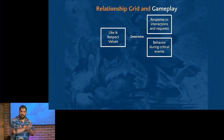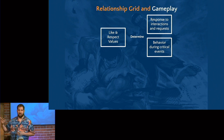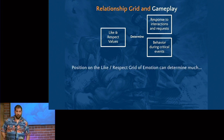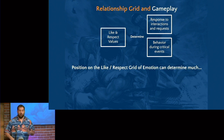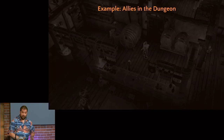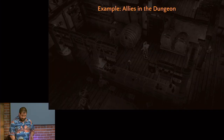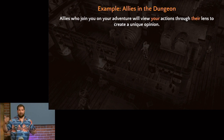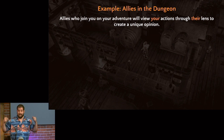So we have like and respect values, and they determine two things: the response to requests and behavior during critical events. How do we get these values to move around?